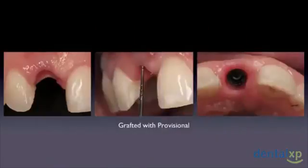In the interim, while the tissue is healing and while we're waiting for our final abutment, we use a provisional abutment to maintain the tissue. As you can see here, after six weeks of healing of a grafted site, this is the way it would look when we finally take out our ENCODE abutment.